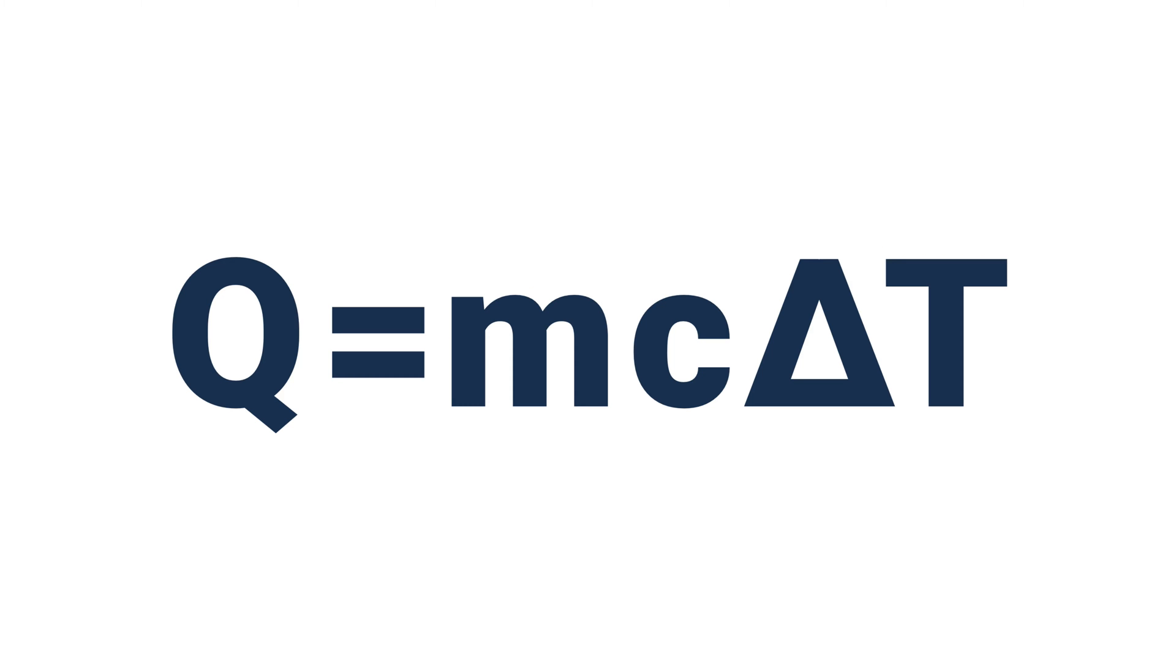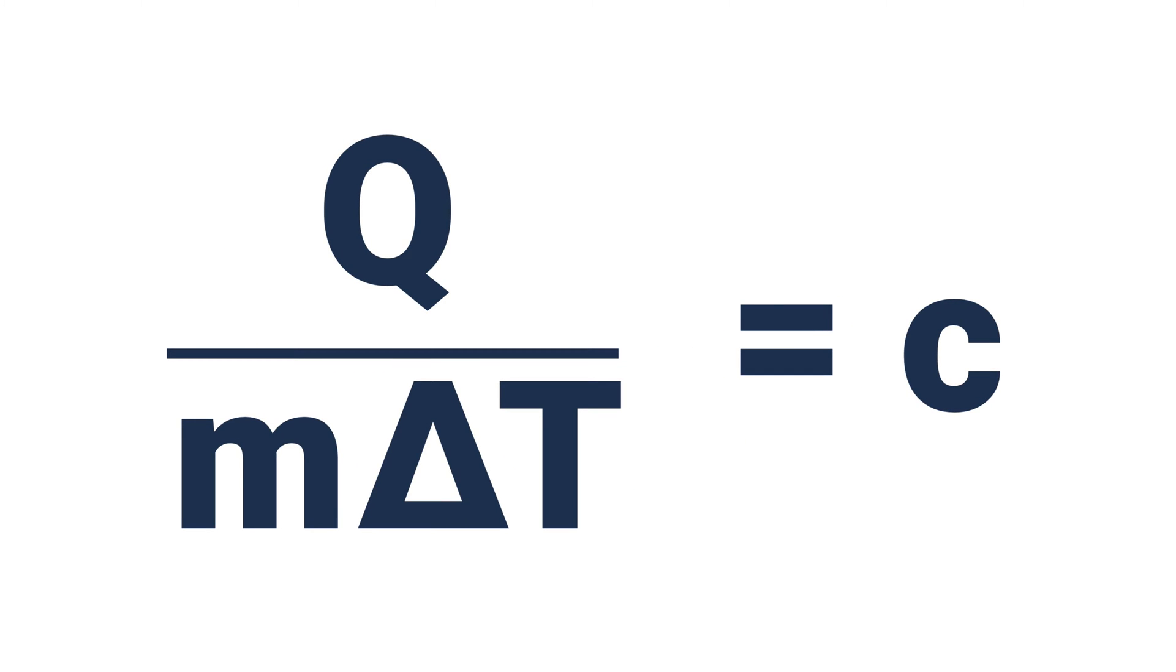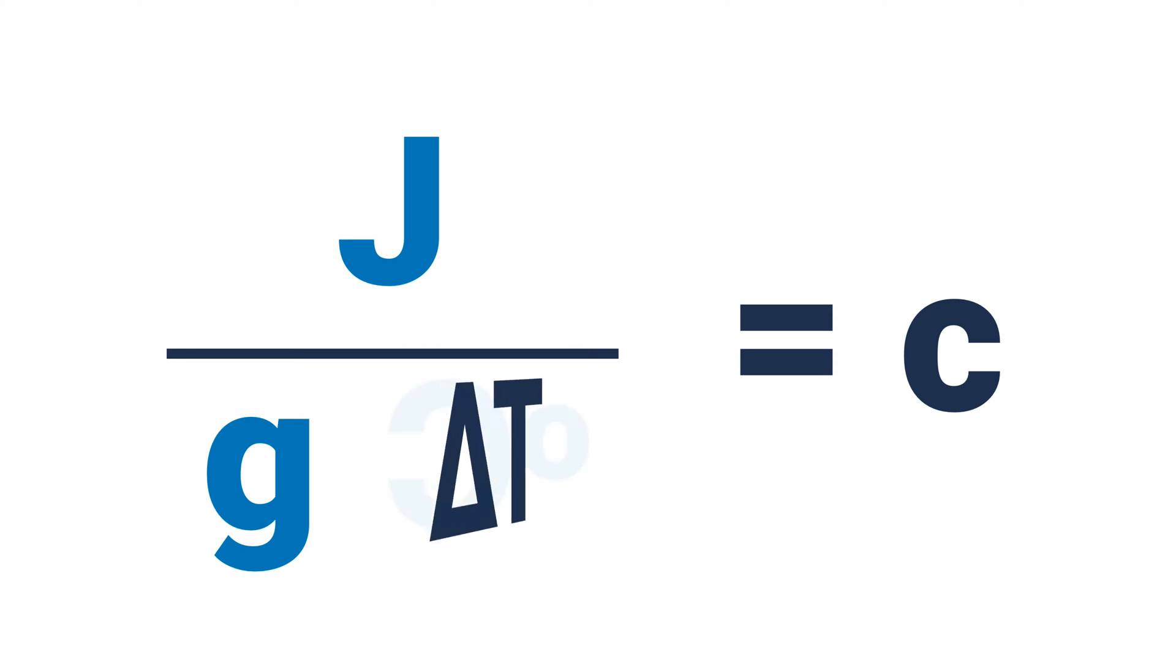So let's head back to Q equals mc delta T. I want to show you how we get this joules per gram degree Celsius or joules per gram Kelvin unit on c. If I rearrange this equation to solve for just c here, I get c is equal to Q over m times delta T. And if I plug in the units for Q, that's J, the unit for m is g grams, and delta T is degrees Celsius, well here's my unit for specific heat: joules per gram degree Celsius or joules per gram Kelvin. So that's where that unit for specific heat comes from.